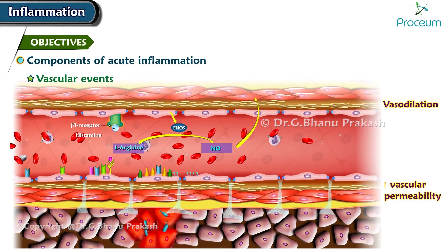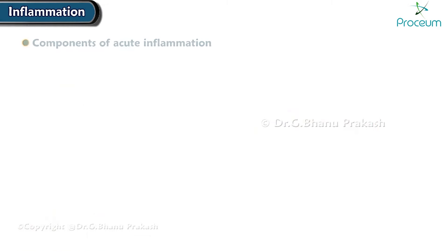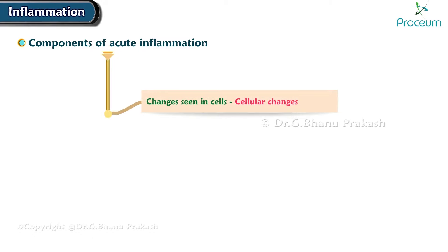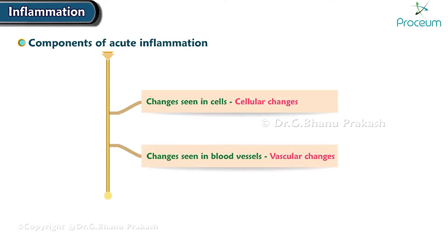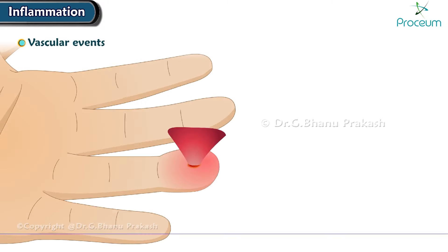Now let's talk about the components that contribute to acute inflammation. The changes seen in inflammation in cells are known as cellular changes, while changes seen in the blood vessels are called vascular changes. Let's start by talking about vascular events.